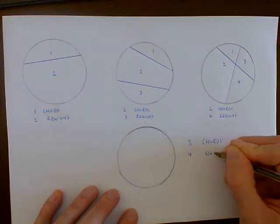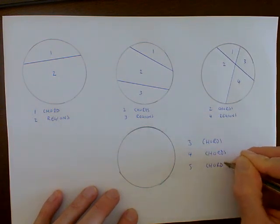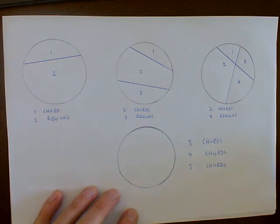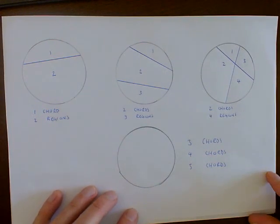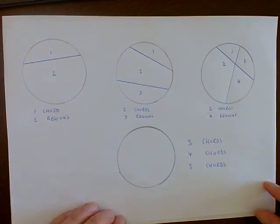Four chords and five chords. And if you can work out the maximum for that, if you can see a pattern, and if you can use your pattern to then make a prediction about how many regions there will be with ten chords.